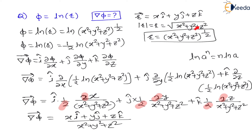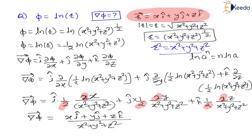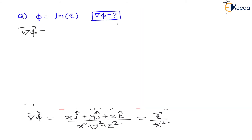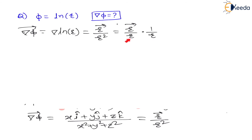Now, since r = √(x²+y²+z²), we have r² = x²+y²+z². Also, x·i + y·j + z·k is the vector r. Substituting, this becomes vector r divided by r². This can be written as (vector r / r)·(1/r). Since vector r divided by its magnitude r is the unit vector r̂, we get: ∇(ln r) = r̂/r. This is the final answer for the first question.